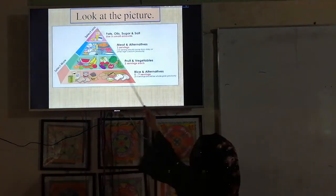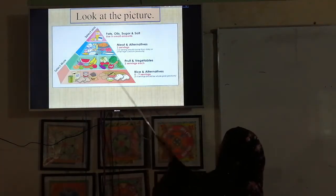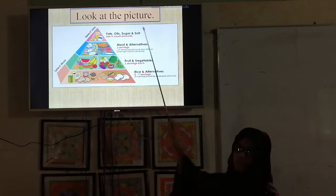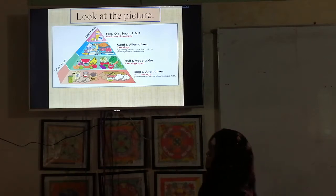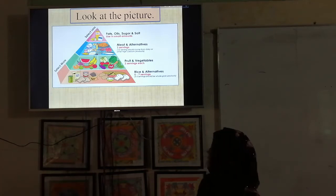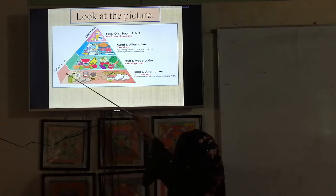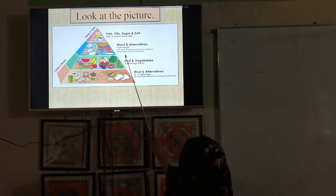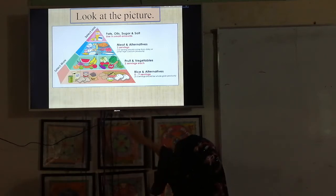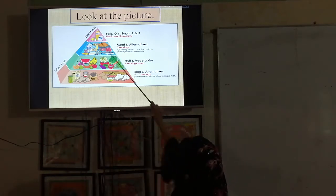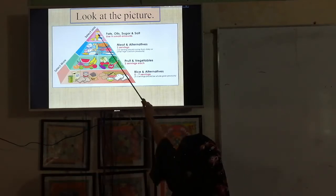Look at the picture. Students, what is this? This is a food pyramid. Let's understand what a pyramid is — a pyramid is a geometric shape with a flat base and triangular sides meeting at a point at the top. If we look at it from the side, it appears as a triangle.